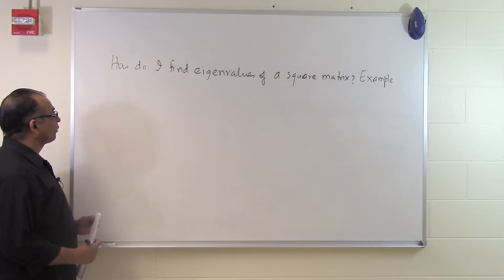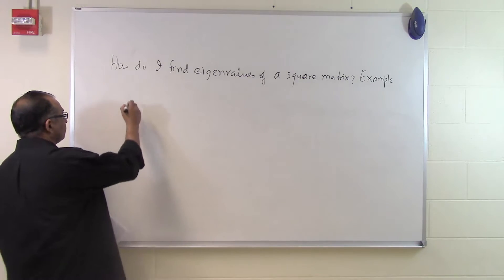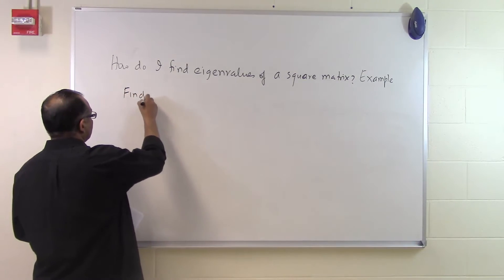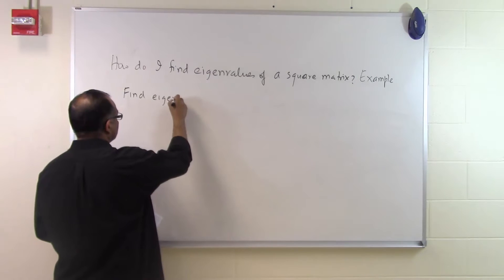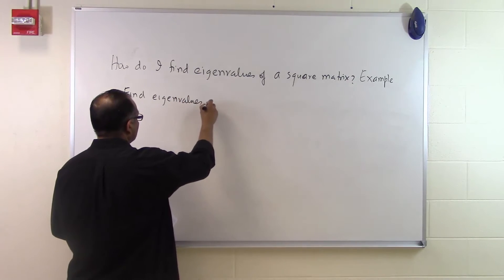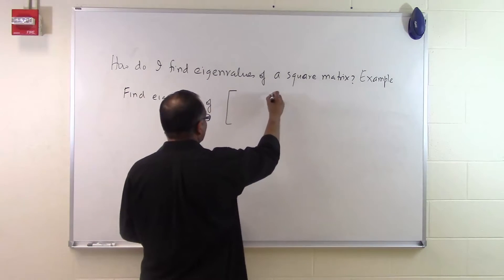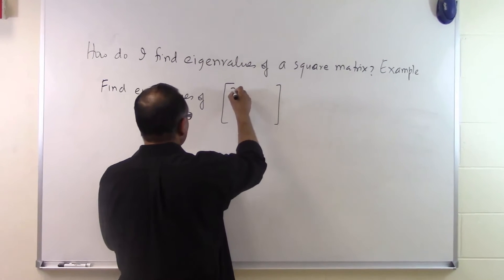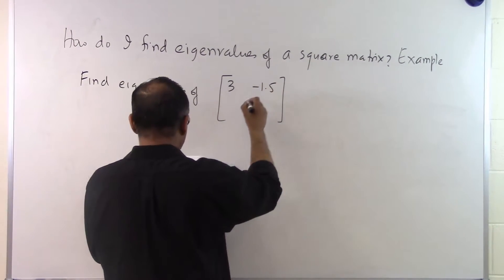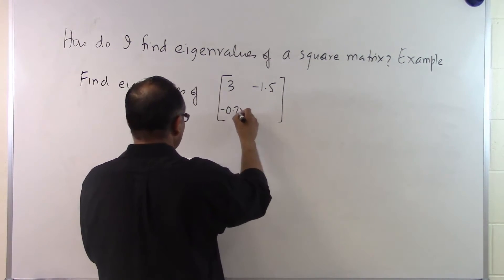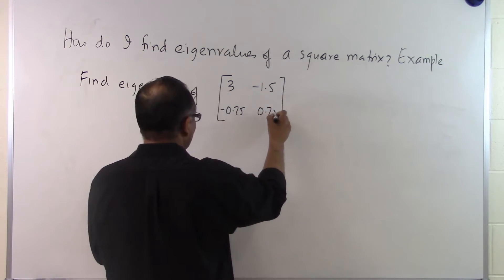In this segment, we'll talk about how to find eigenvalues of a square matrix through an example. Let's suppose you're asked to find eigenvalues of this square matrix: 3, -1.5, -0.75, and 0.75.